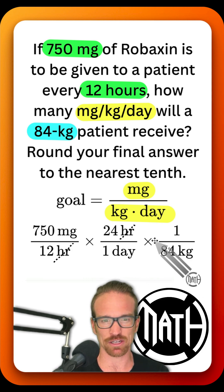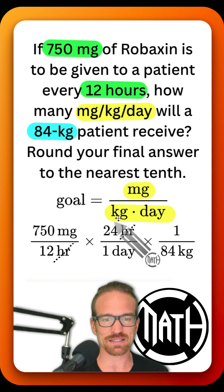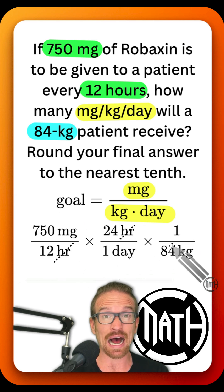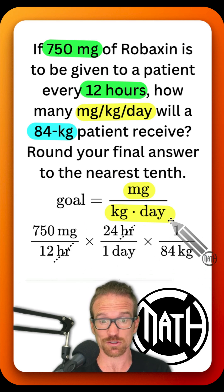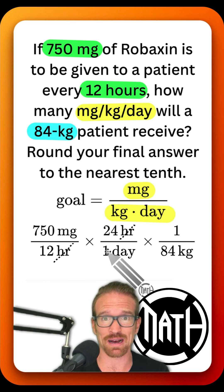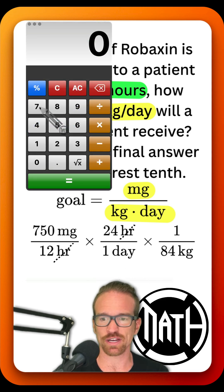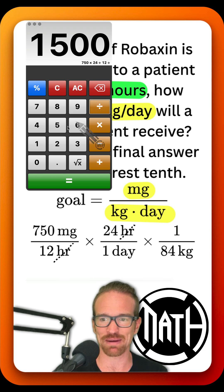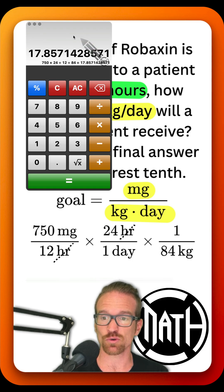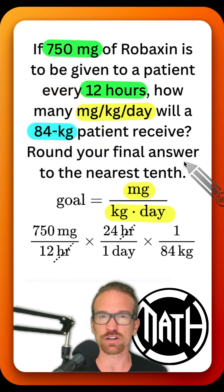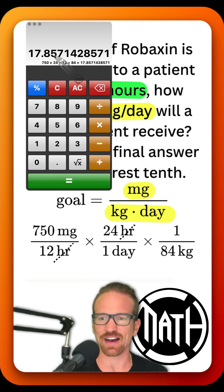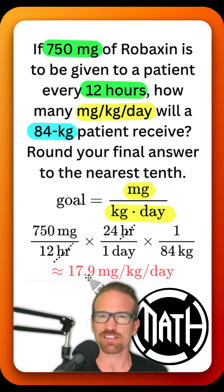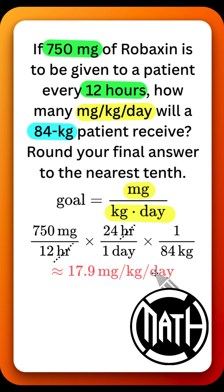When I meet my goal, I grab my calculator. I multiply all of my top numbers and divide by all of my bottom numbers — I always skip the ones, because multiplying or dividing by one doesn't change anything. On the calculator: 750 times 24, immediately divide by 12, and divide again by 84. Rounding to the nearest tenth, the five tells the eight to go up. Therefore, our final answer is 17.9 milligrams per kilogram per day.